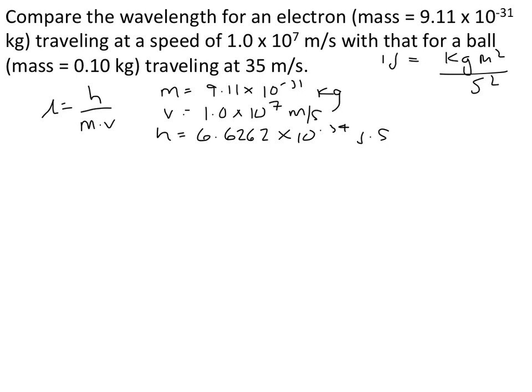We can plug everything into the equation on the left-hand side. Our wavelength equals 6.6262 times 10 to the negative 34th joules times seconds divided by 9.11 times 10 to the negative 31 kilograms times 1.0 times 10 to the 7th meters per second. If we plug this into our calculator, we end up with 7.27 times 10 to the negative 11.